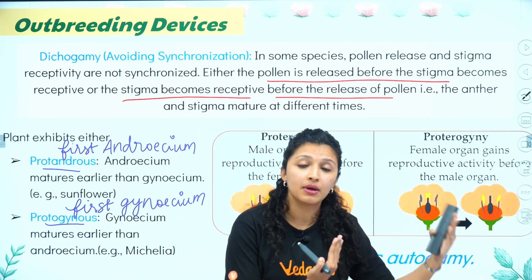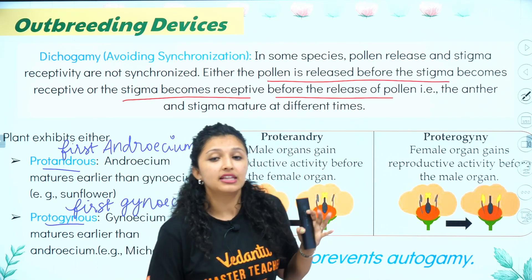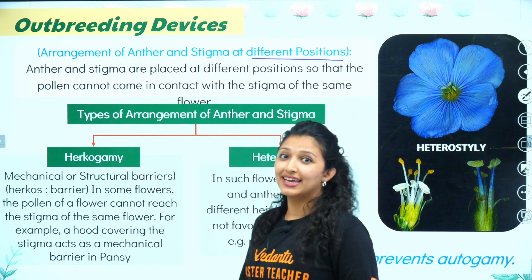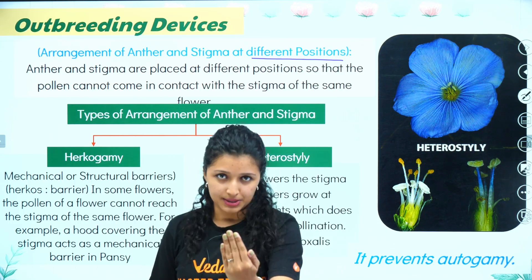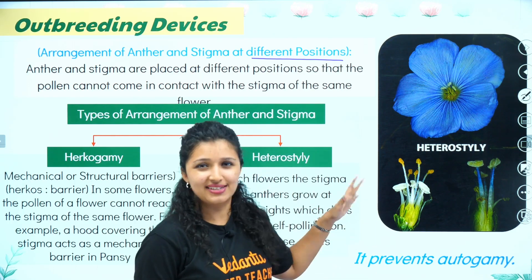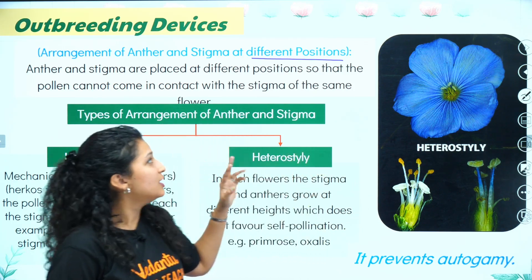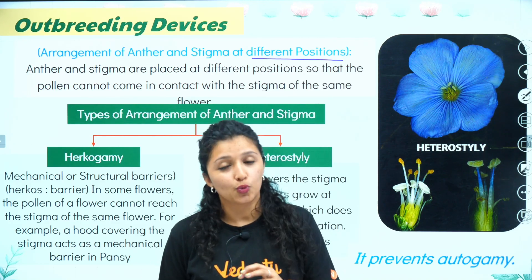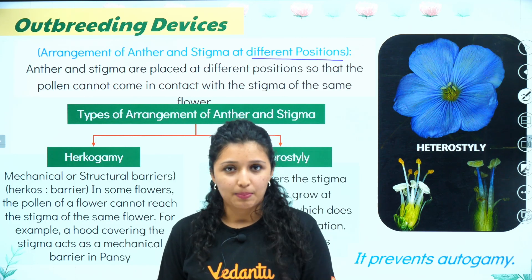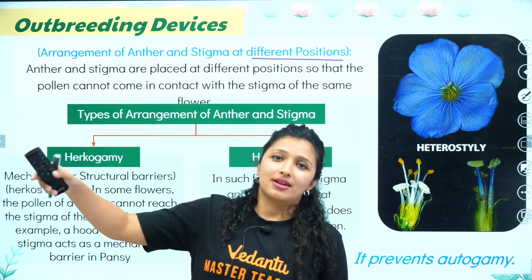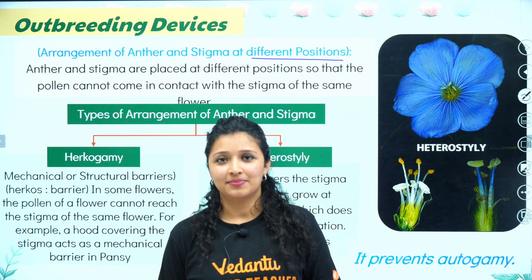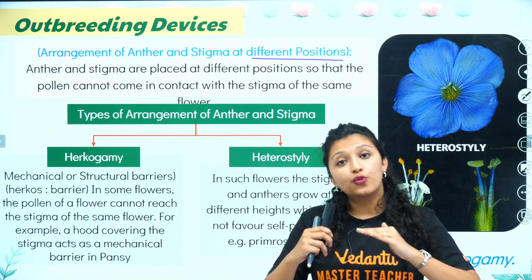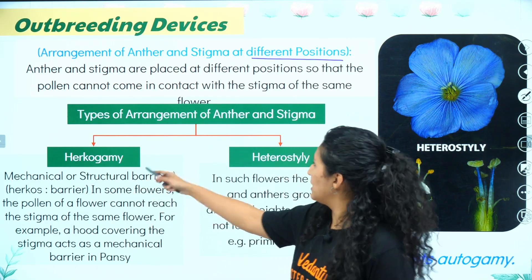So in Dicogamy, the same flower cannot do autogamy because the timing is off. Next we look at the second factor — physical distance. The arrangement of anther and stigma at different positions is the next device. When they are sitting together in the flower, self-pollination can happen, so physical distance is increased.